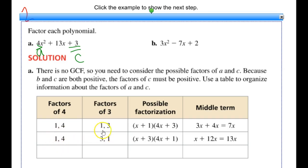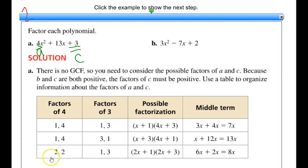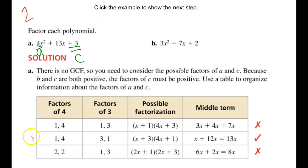I try the switched order and check the middle term — that one works. But let's also try the other possible factors of 4, which is 2 times 2, with factors of 3 being 1 and 3. Since both factors of 4 are the same, I only need to try once. I factor it out, find the middle term, and see it ends up being 8x. Looking back, the middle combination that worked is the correct answer. So my final factorization of 4x squared plus 7x plus 3 is the quantity x plus 1 times the quantity 4x plus 3.